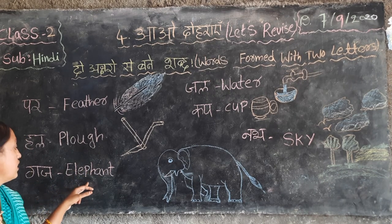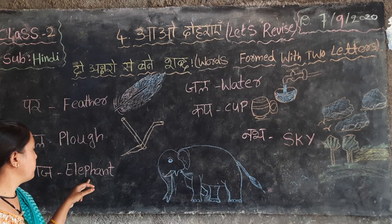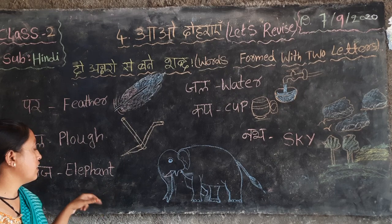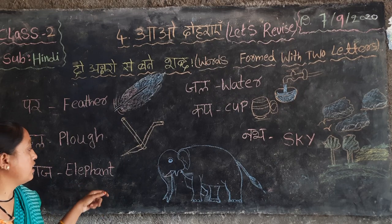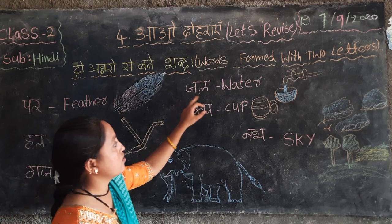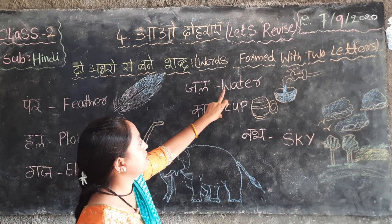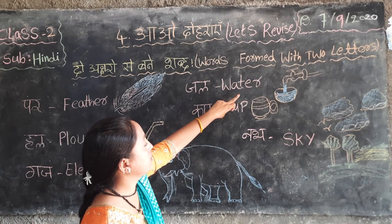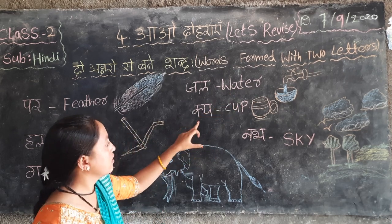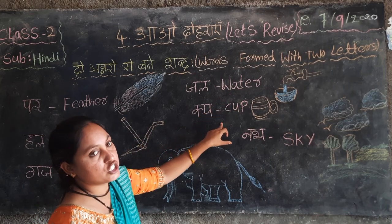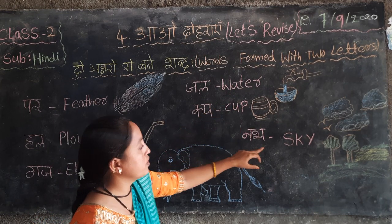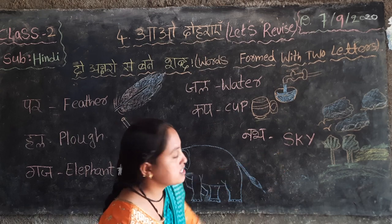Gaj — E-L-E-P-H-A-N-T, elephant. Gel — water, W-A-T-E-R, water. Cup — C-U-P, cup. Nub — S-K-Y, sky.